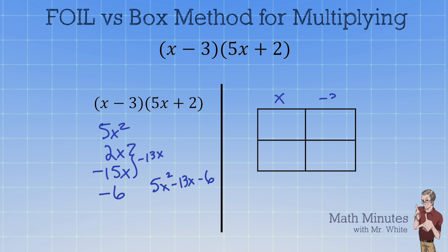So the box method I'm going to put the x and the -3 up here. I'll put the 5x and the 2 down here. Now we just triangulate and multiply in the different cells much like a Google Sheet or Excel spreadsheet. So 5x times x that's 5x². 2 times x that gives us +2x. -3 times 5x that is -15x. And then -3 times 2 that is -6.